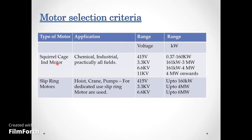In most cases we use squirrel cage motors. Their applications span chemical plants, industrial plants, and practically all fields. The voltage ranges are: 415V for 0.37kW to 160kW; 3.3kV for 160kW to 3MW; 6.6kV for 161kW to 4MW; and from 11kV onwards for 4MW and above.